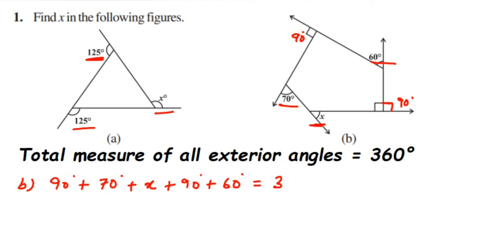So we are going to add up all the values. So 90 plus 90 is 180 and 180 plus 60 when you do it, you will get 240. 240 plus 70 when you do it, you will get 310. So 310 degrees plus x is equal to 360 degrees.